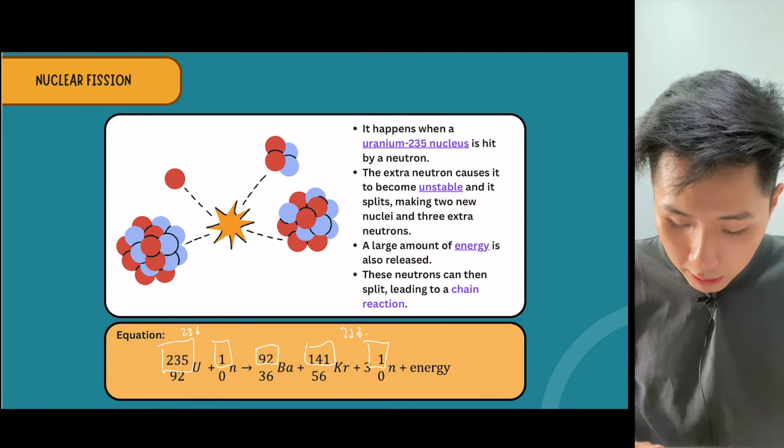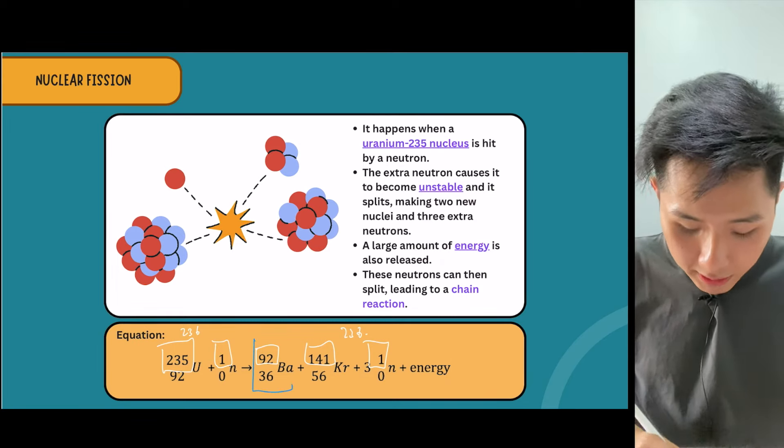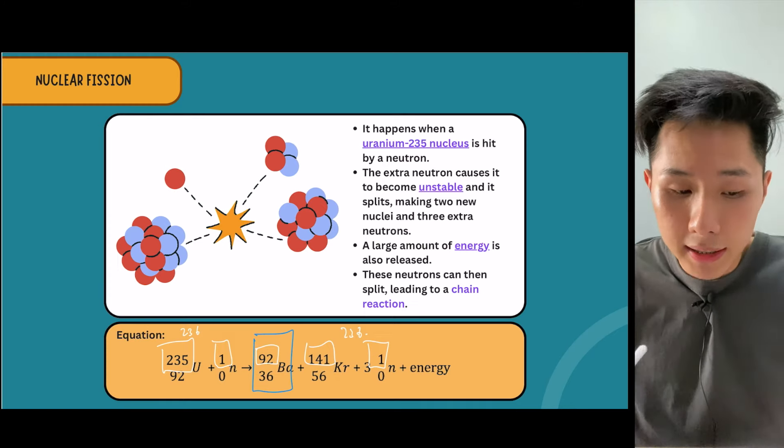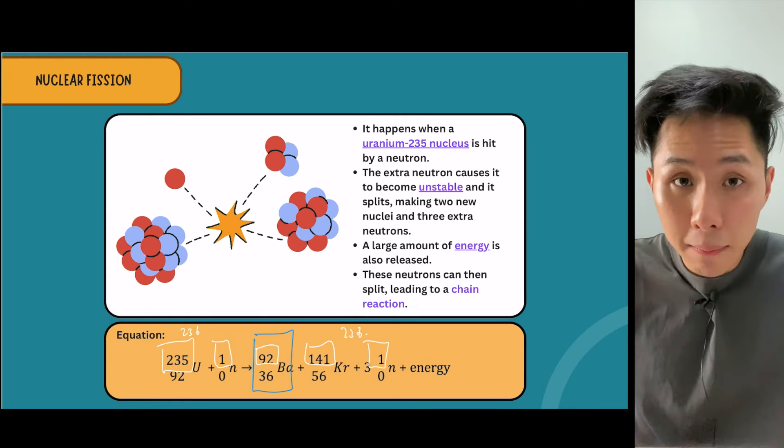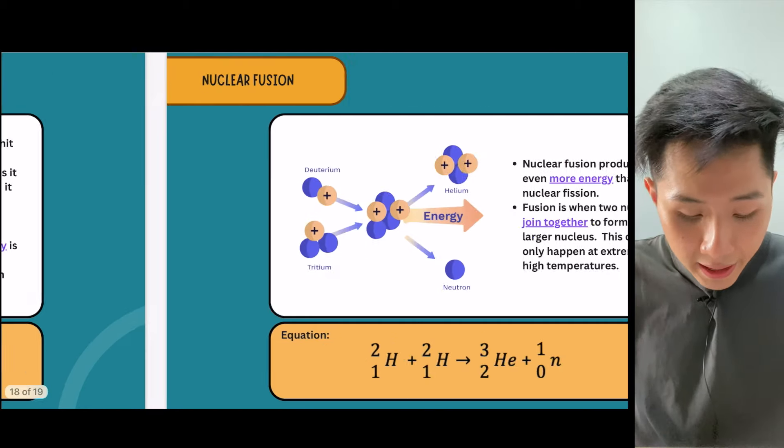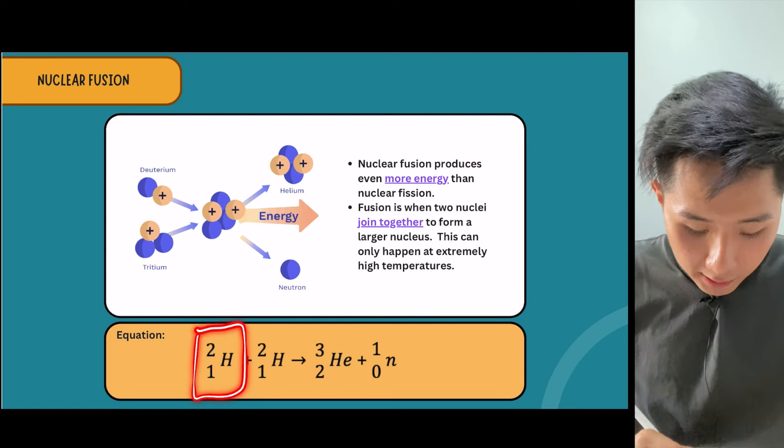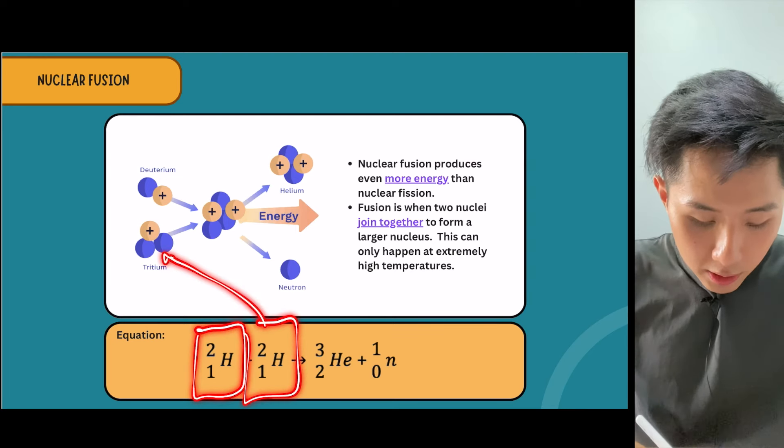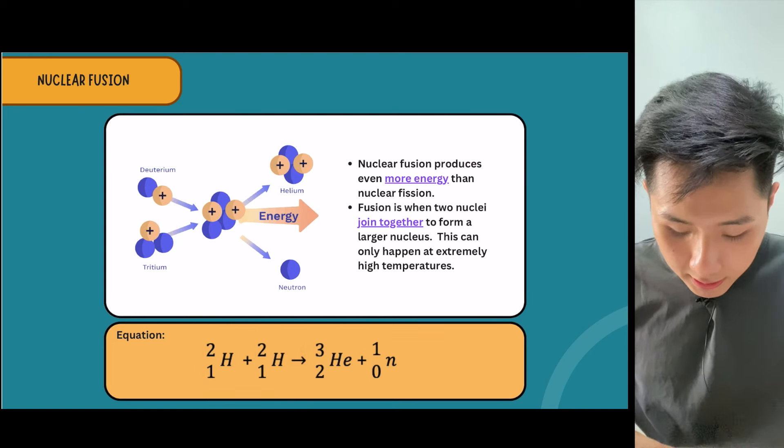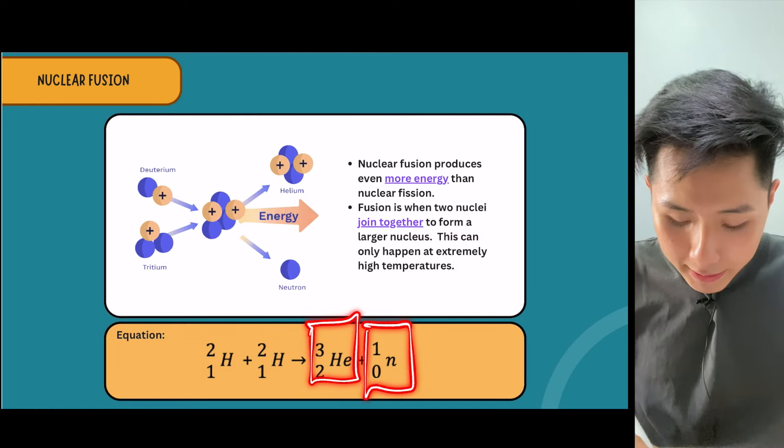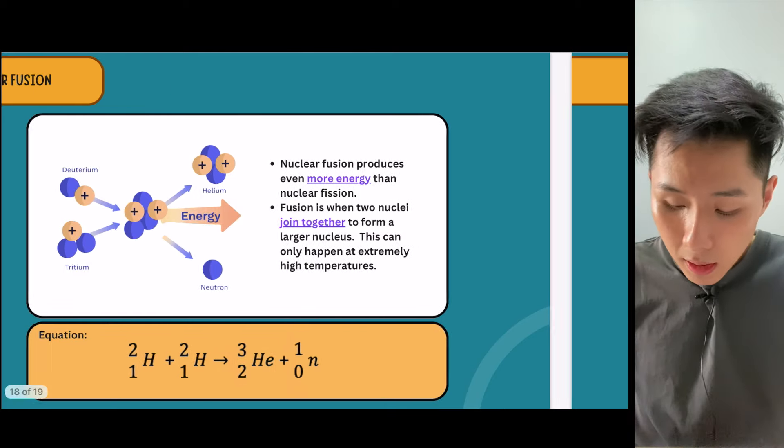This also leads to chain reaction because all these elements could be hit by another element leading to more reactions - that's what happens in nuclear fission. As for nuclear fusion, it's simpler - when two hydrogen elements combine together to form helium plus a neutron plus a lot of energy.